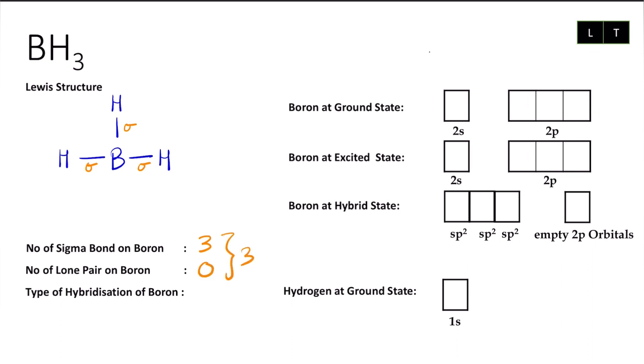The total will be three, so the type of hybridization for boron will be sp2.